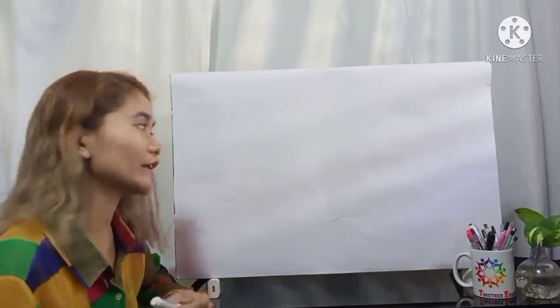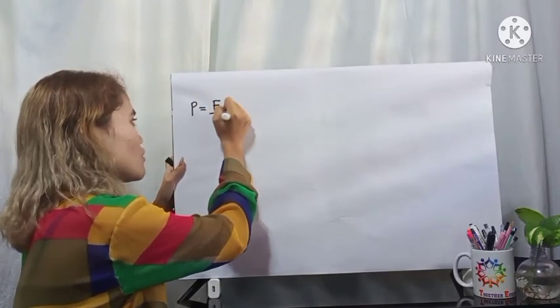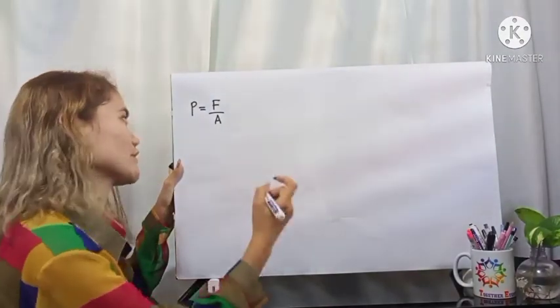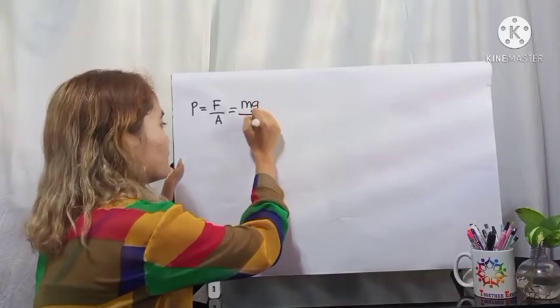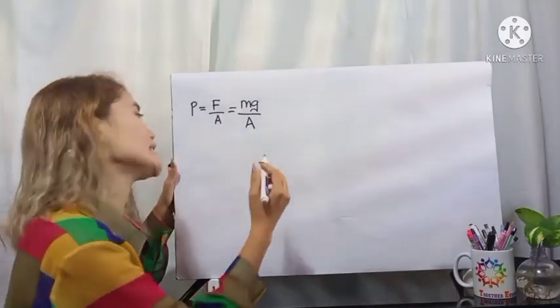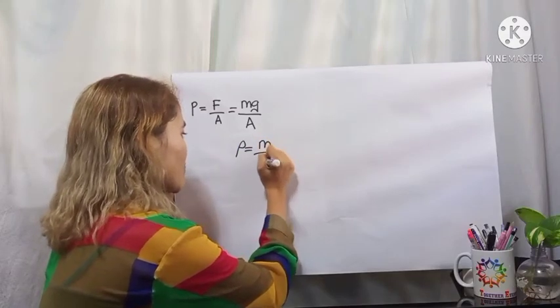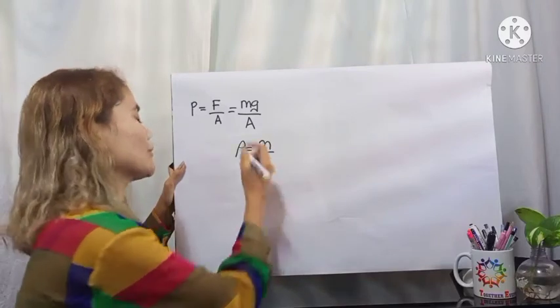You might be wondering where this formula for liquid pressure came from. Basically, it is derived from the formula of pressure, wherein pressure is equal to force over area. And we know that force is equal to mass times gravity, so we can replace that with mass times gravity over area. And to find the value of mass, we have to use density. We know that density is equal to mass divided by volume, so if we multiply both sides by volume, we can find the mass.